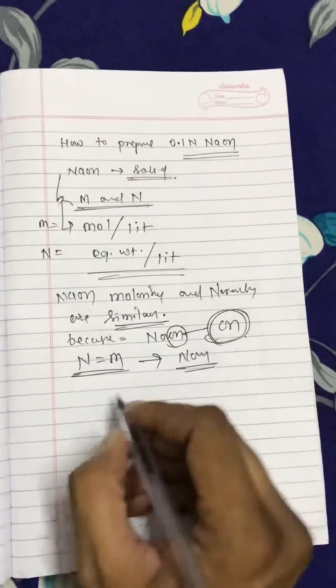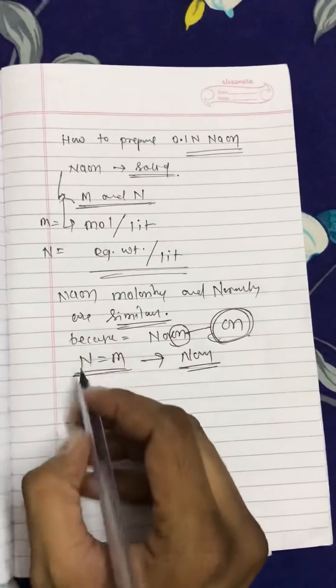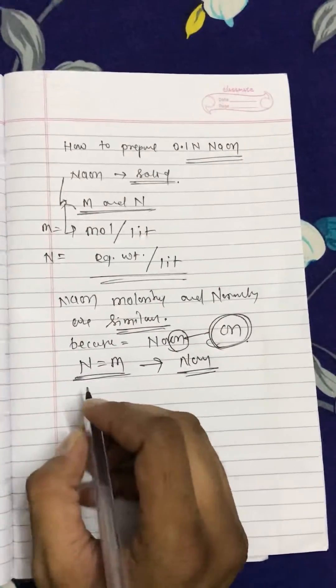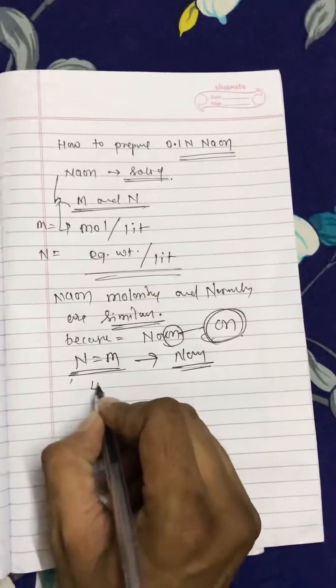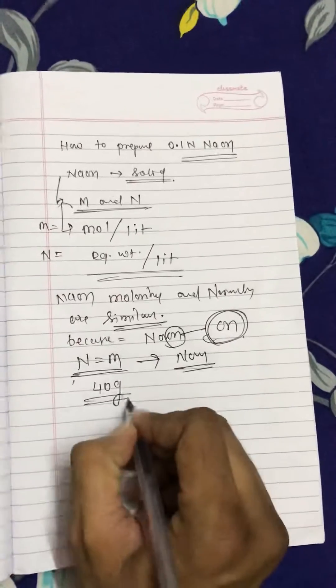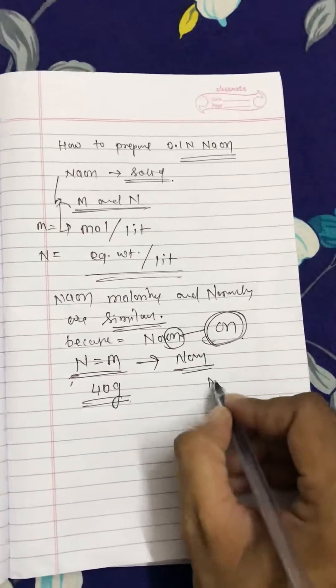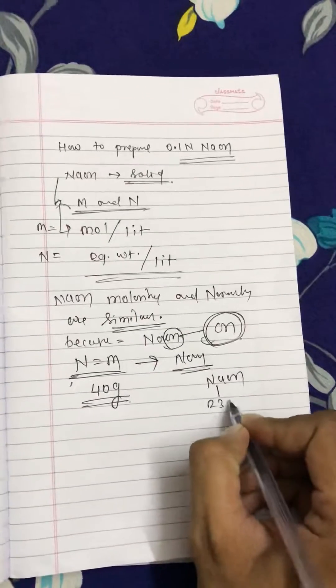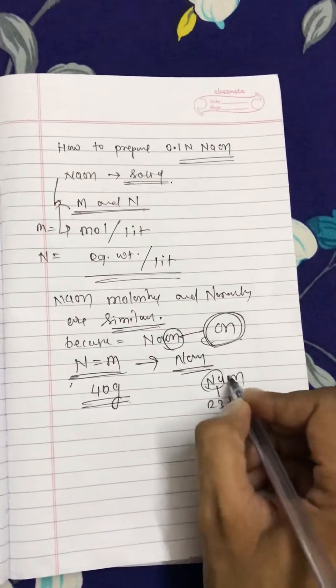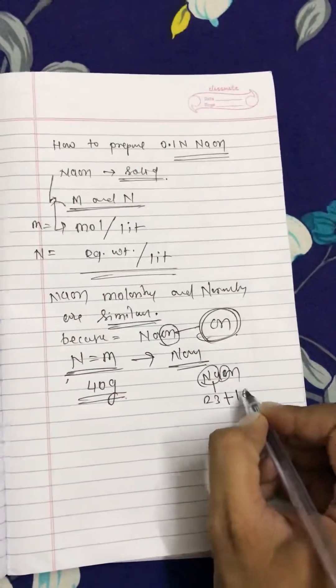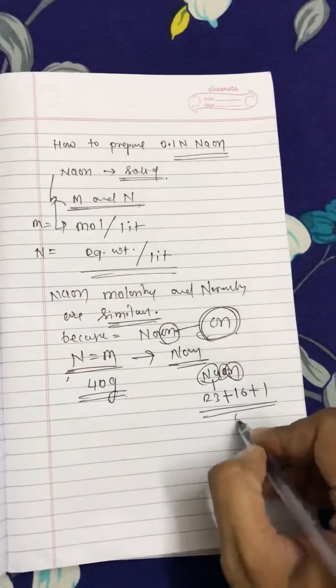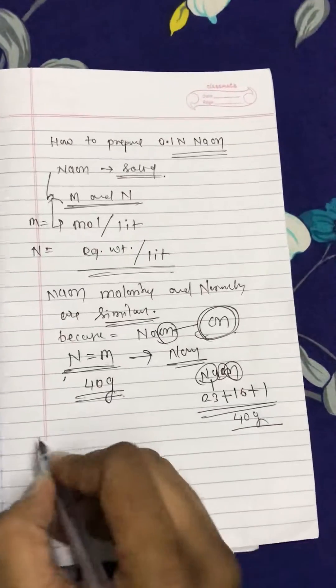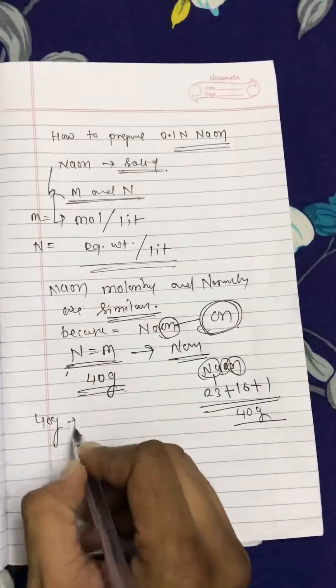The molecular weight, which equals the equivalent weight for NaOH, is 40 grams. In NaOH: 23 for Na, 16 for O, and 1 for H ion, overall 40 grams.